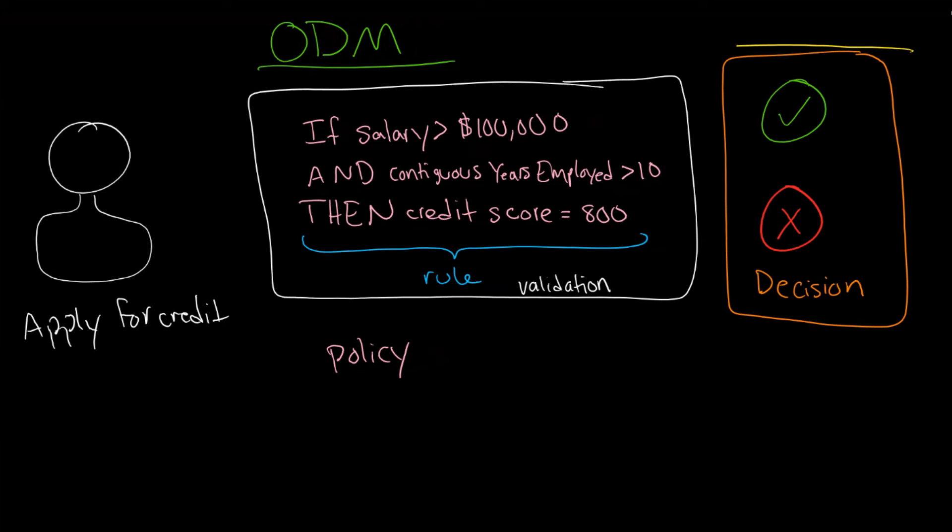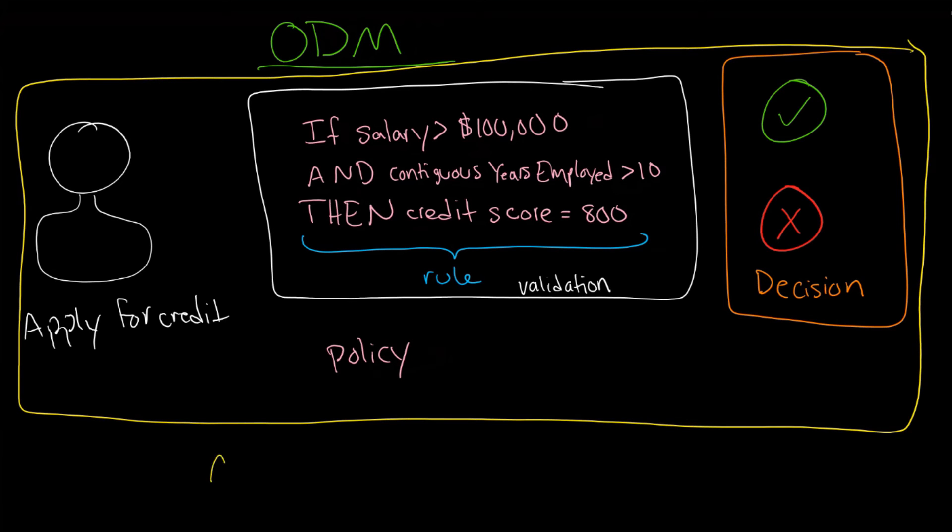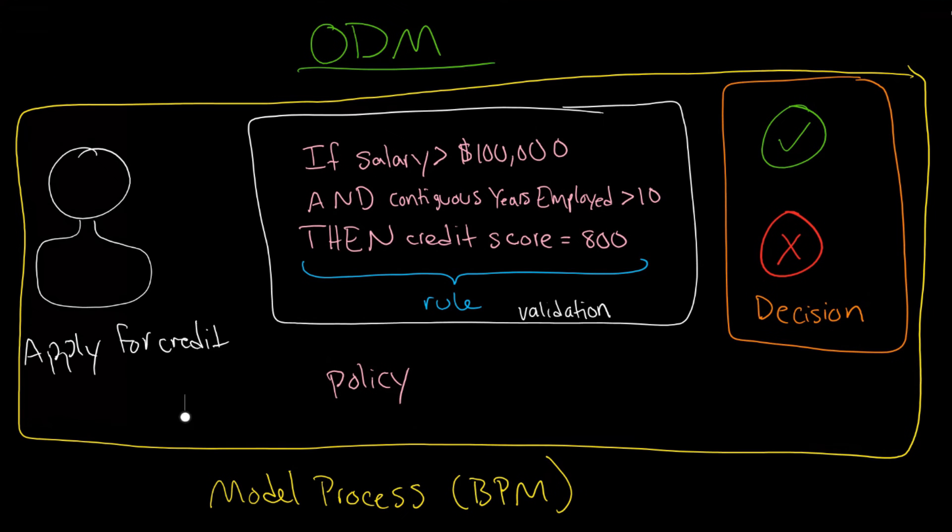Essentially, what we have done here is to create a kind of model of a particular process, a business process. This sort of thing can be modeled in BPM. ODM deals with rules. It deals with this part of that process.